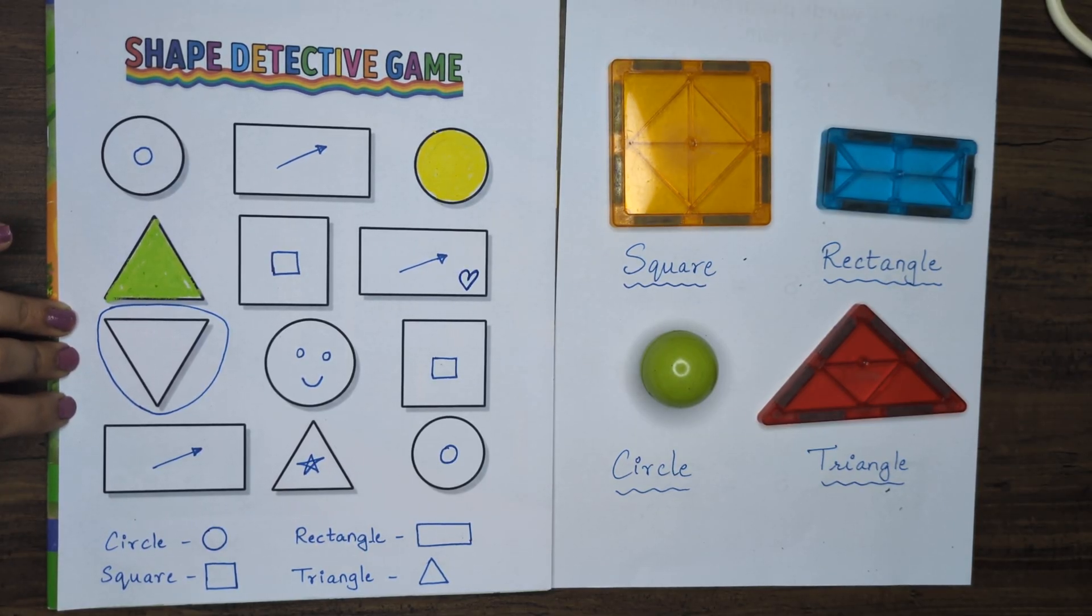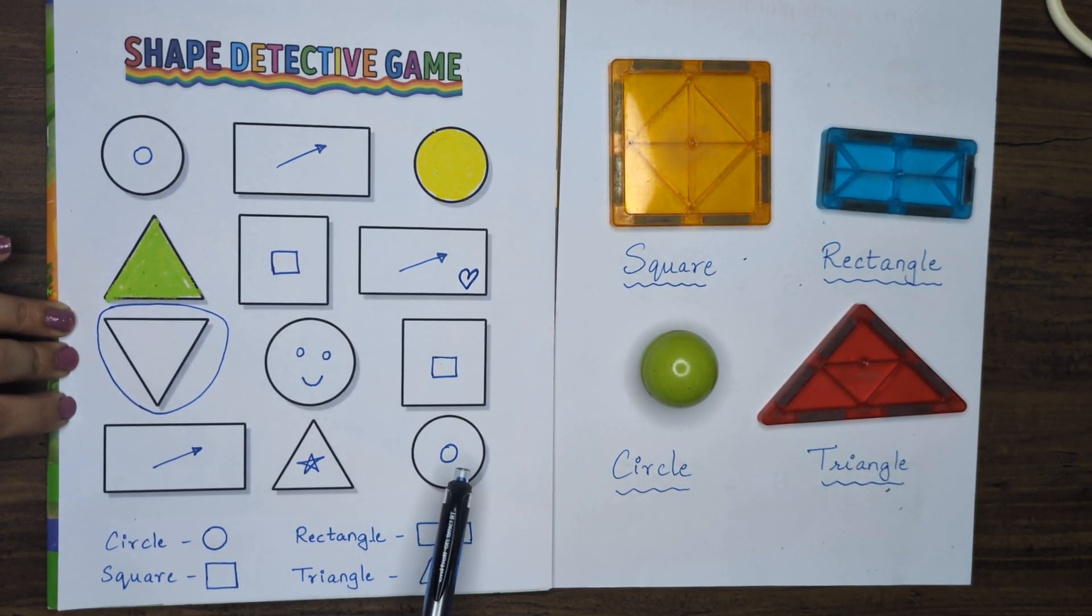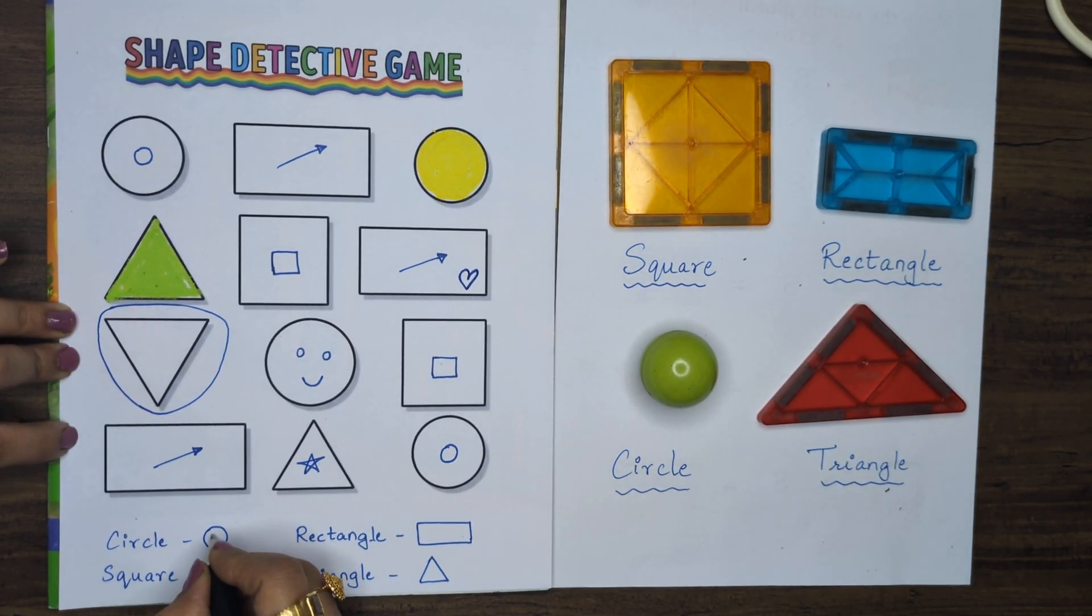Let's count all the shapes together. Number of circles in the given game: 1, 2, 3, 4. Great, so four circles are there.